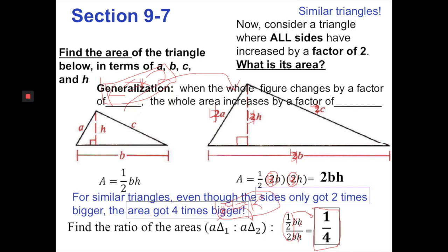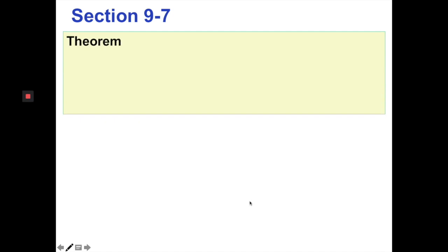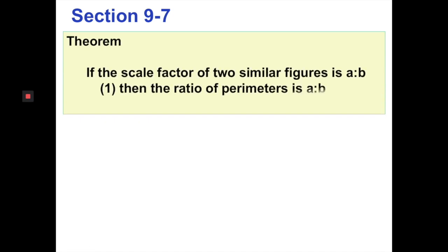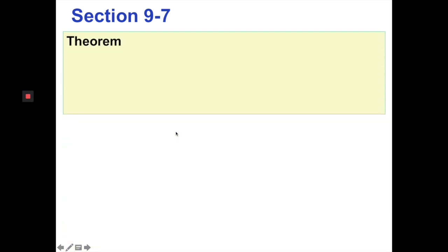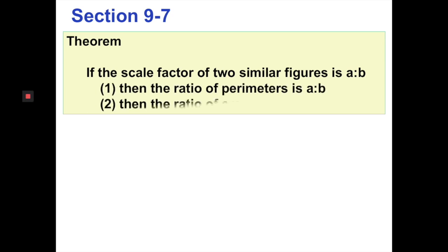To summarize — generalization: when the whole figure changes by a scale factor of k, the whole area increases by a factor of k squared. This leads to our theorem: if the scale factor of two similar figures is a to b, then the ratio of perimeters is still a to b. In our example with scale factor 2-to-1, the perimeters would still be in a 2-to-1 ratio, and the ratio of areas would be the ratio of the squares of the scale factor.